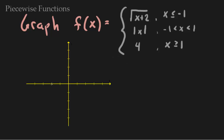Let's start with graphing the square root of x plus 2. It's the square root of x shifted to the left two units, so we start right here. When x is negative 1, you get the square root of 1, which places us here. The graph looks like a square root curve, but it's restricted to x less than or equal to negative 1, so we erase the dotted portion beyond that and connect the dots — exactly like a square root. That's that piece.